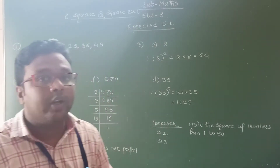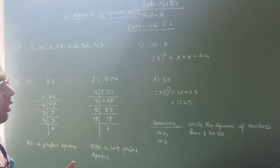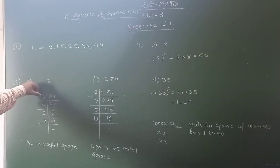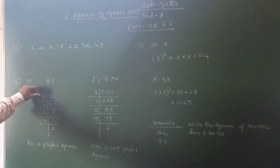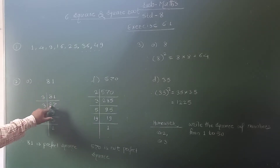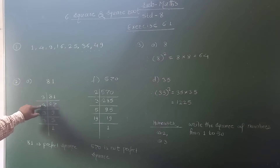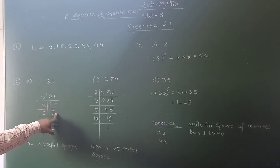81 is divisible by which prime number? It is not divisible by 2. It is divisible by 3. Therefore, here I write 3. 81 divided by 3, we get 27. Then 27 is divided again by 3, and here we get 9.